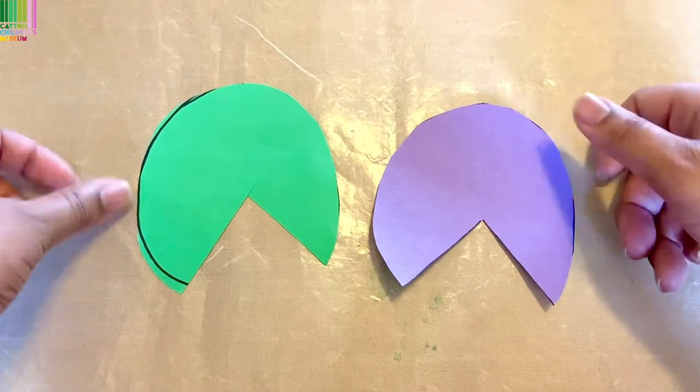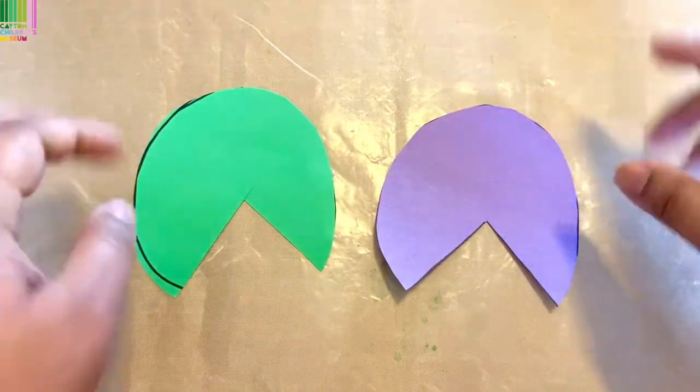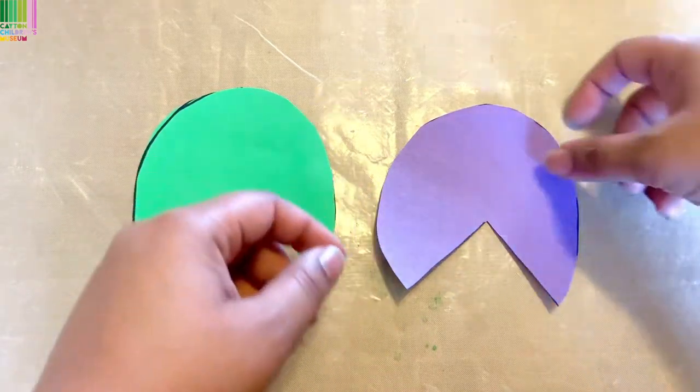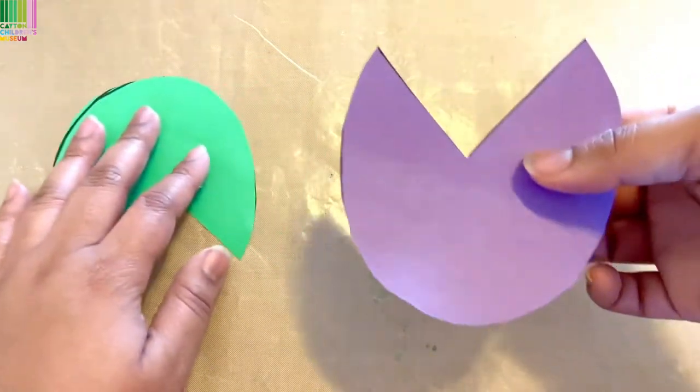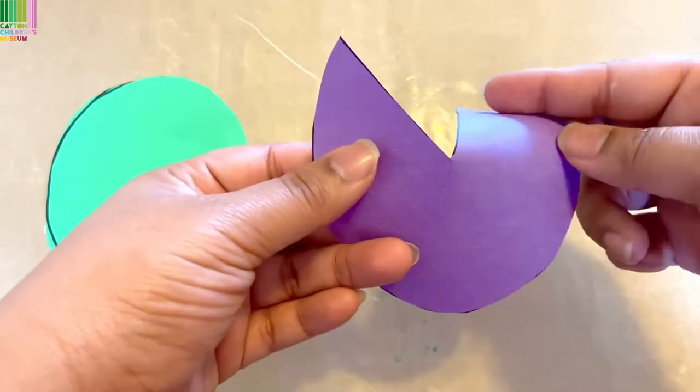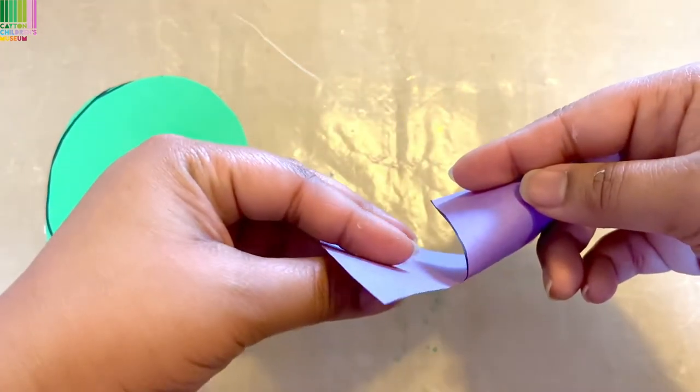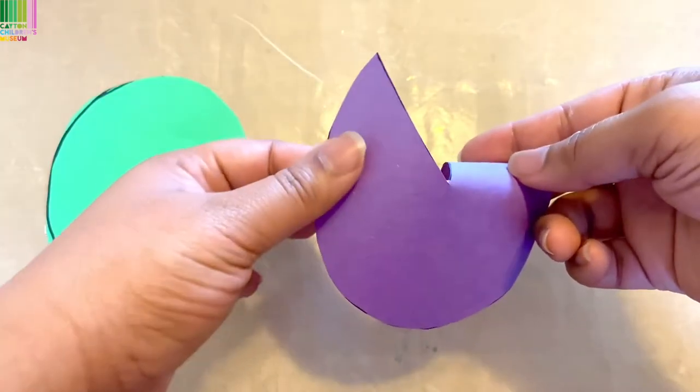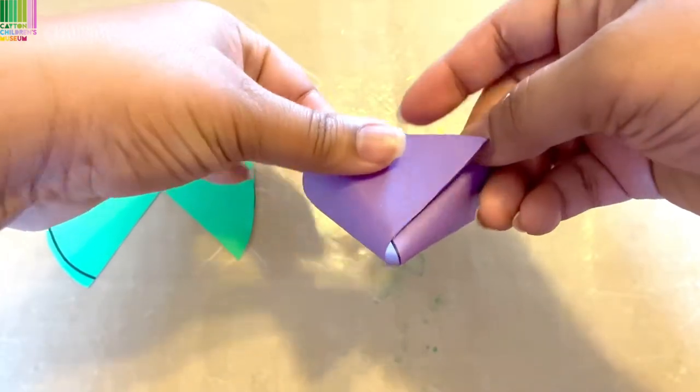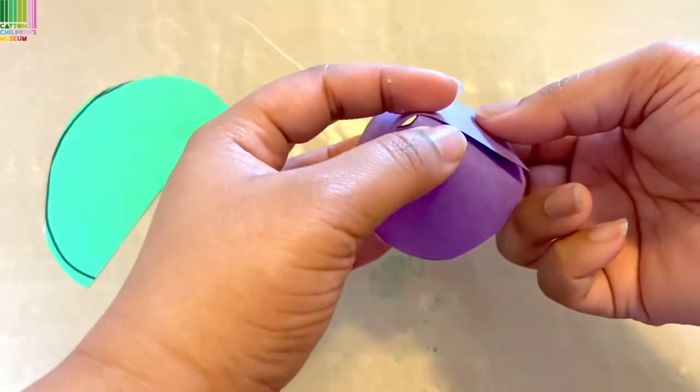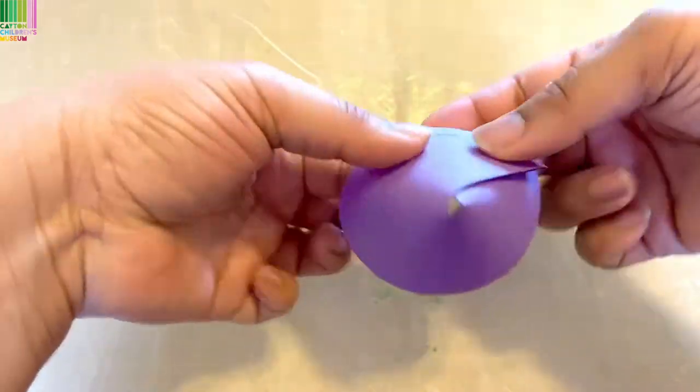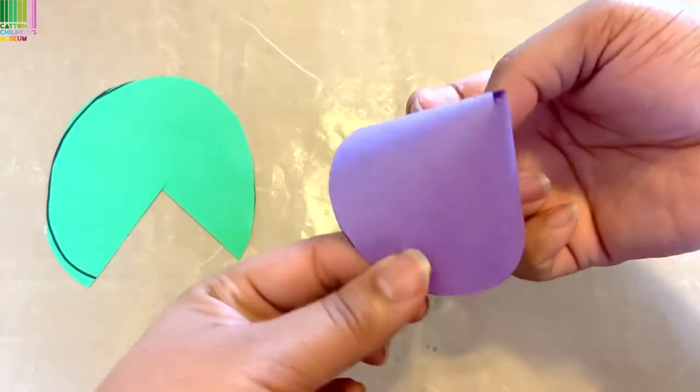Now that we have our tops ready to go, we are going to go ahead and fold and roll them. You're going to take your paper, you're going to take one side and you're going to bend it one way. And then you're going to take this side and put it right on top, so it overlaps, so it makes a cone shape.